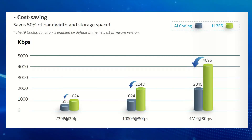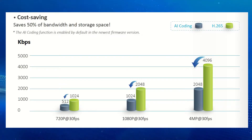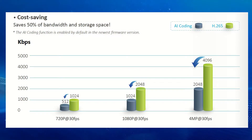By doing this, the camera saves a lot of bandwidth — you can save up to 50 percent of the bandwidth compared to just regular H265 compression.